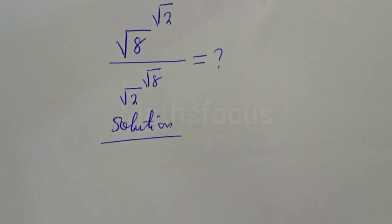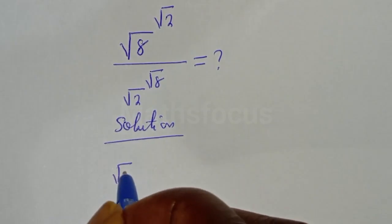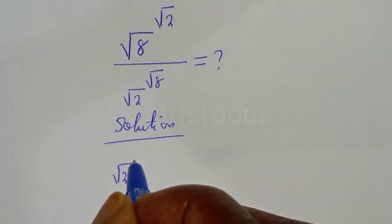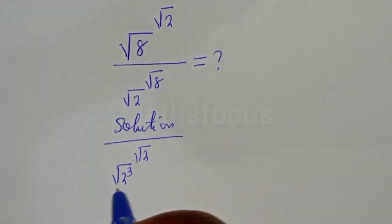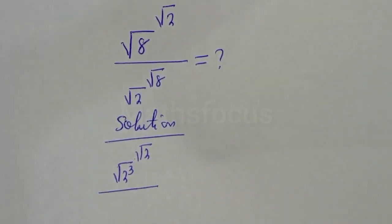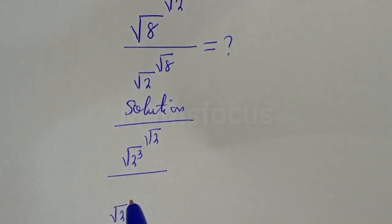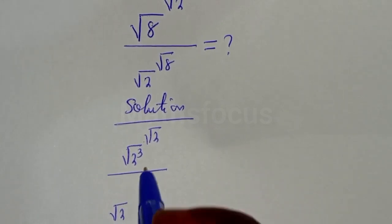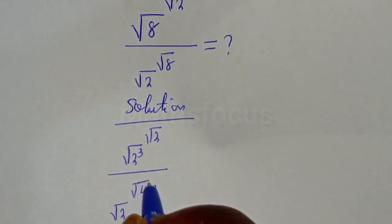Square root of 8 can be written as square root of 2 raised to the power 3, to the power of square root of 2, divided by square root of 2 to the power of square root of 8, which is 4 multiplied by 2.